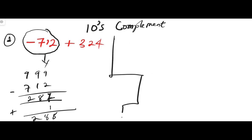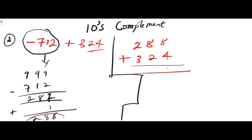We add 288 plus 324. Eight plus four is twelve, carry one; one plus eight plus two is eleven, carry one; one plus two plus three is six. So we get 612. Since we expect a negative answer (negative 712 plus 324), we need to find the ten's complement of 612.